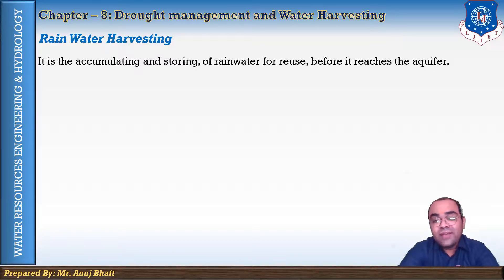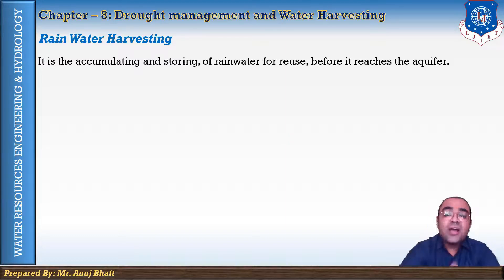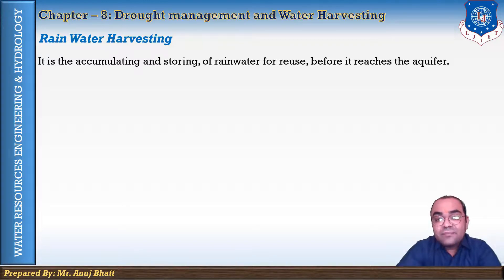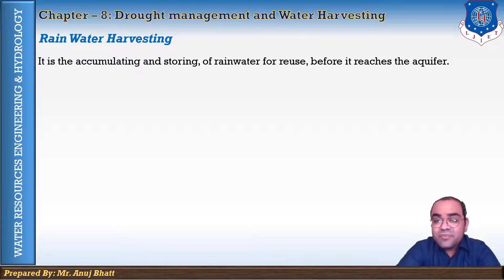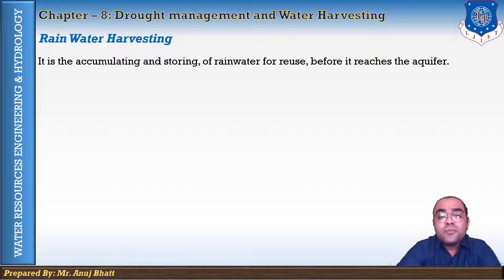Rainwater harvesting has been used to provide drinking water, water for livestock, water for irrigation, and other uses. Rainwater collected from the roofs of houses and local institutions can make an important contribution to available drinking water. It can supplement subsoil water levels and increase urban greenery. Water collected from the ground, sometimes from areas specially prepared for this purpose, is called stormwater harvesting.